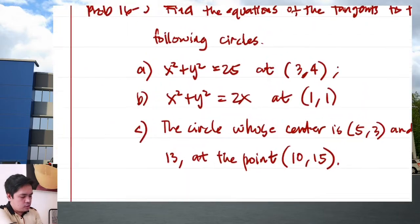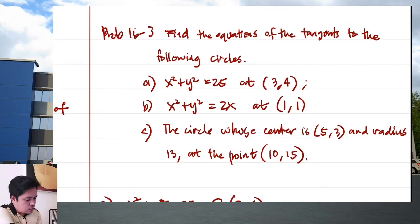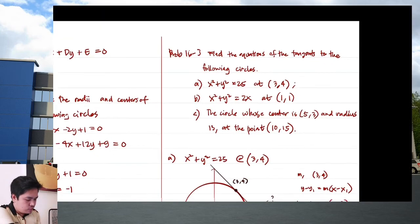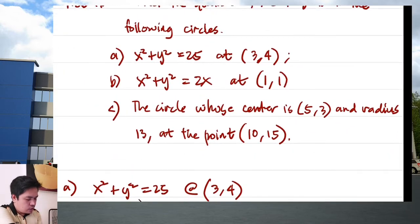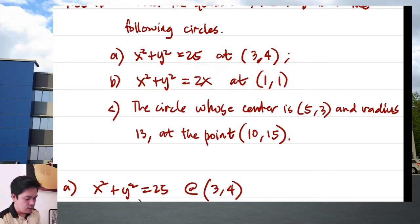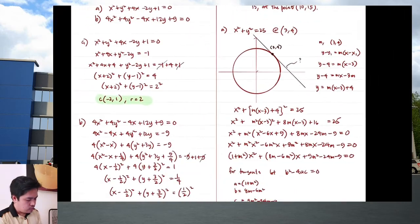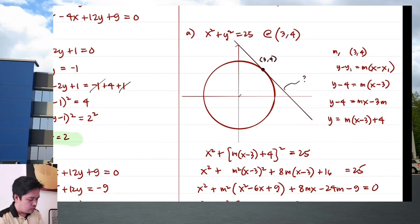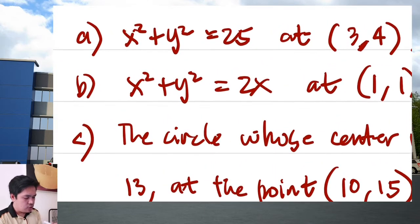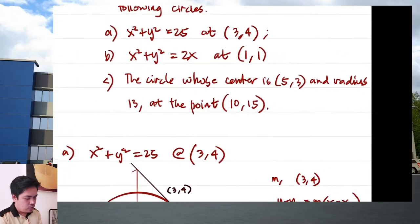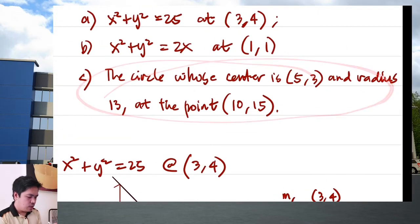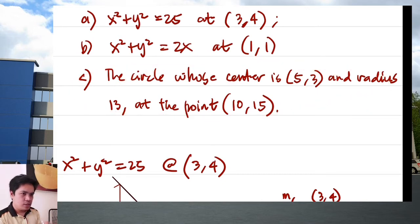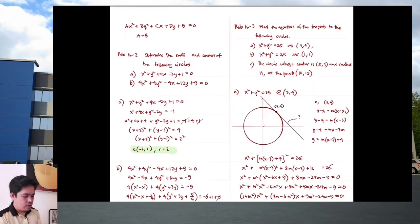As an assignment, solve the second tangent problem using the same method — completing the discriminant condition. It's slightly more complicated since the center is not at the origin, but the approach is the same. First get the standard equation of the circle before finding the tangent at the given point (10, 15). Post your answer in the Facebook group.